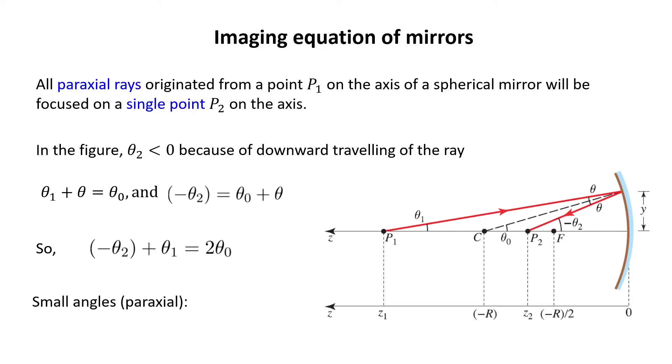When the angles are small, I can write an angle theta equal to sine theta or tangent of theta. Both are almost equal. Here I can write tangent of theta 0 is almost theta 0.